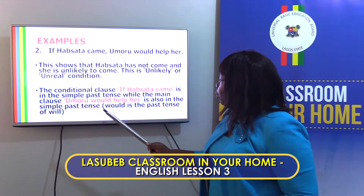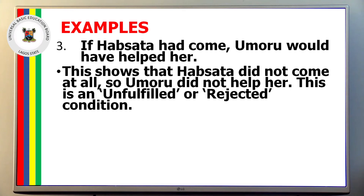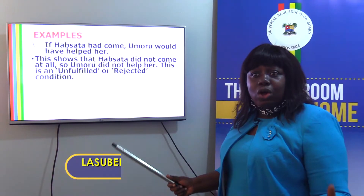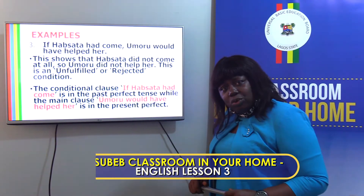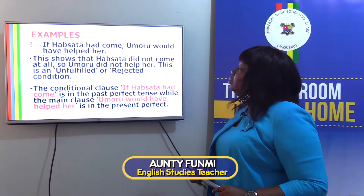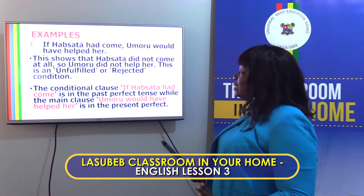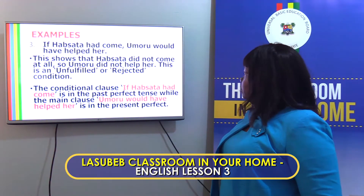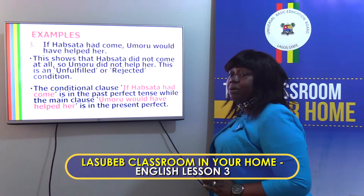The main clause 'Umori would help her' is also in the simple past tense. Moving on: 'If Absata had come, Umori would have helped her.' This shows that Absata did not come at all, so Umori did not help her. We call this the unfulfilled or rejected condition. The conditional clause is in the past perfect tense, while the main clause is in the present perfect tense.